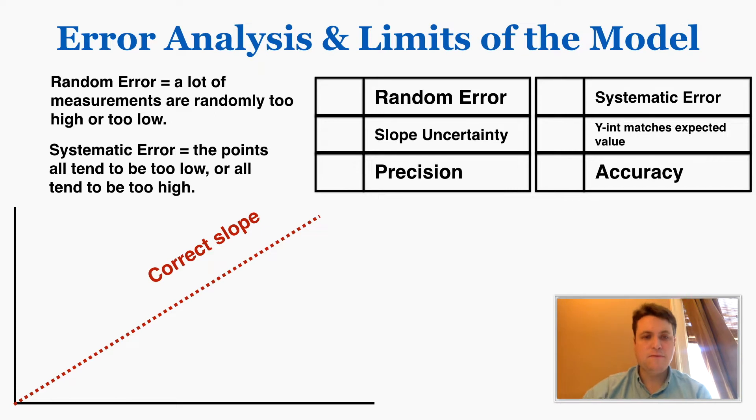The difference between that and systematic error is that systematic error means the points all tend to be too low or all tend to be too high.